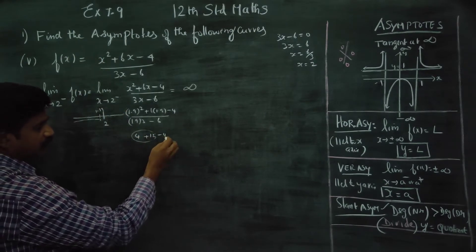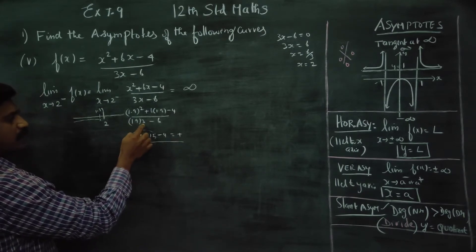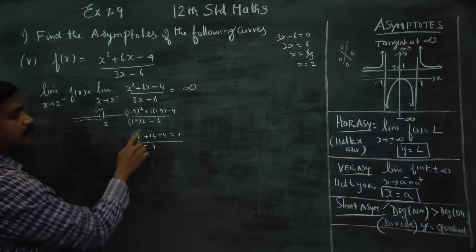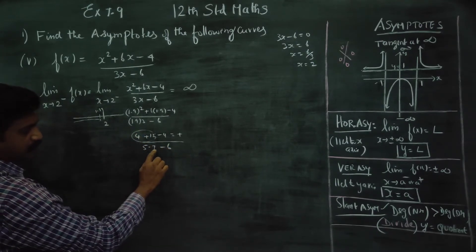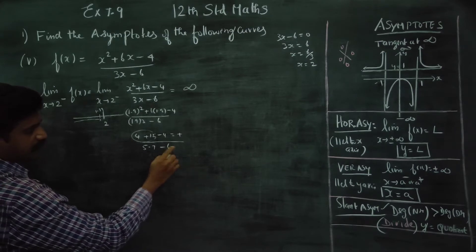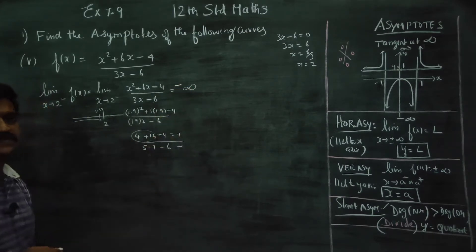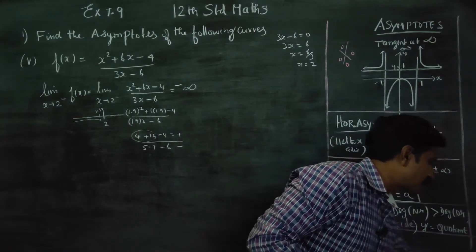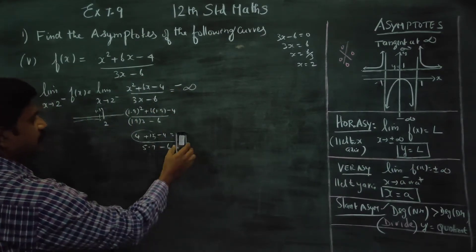Substituting x = 1.9: the numerator is positive. The denominator is 3(1.9) - 6 = 5.7 - 6, which is negative. Positive divided by a negative number is negative. Therefore, the left-hand limit is minus infinity.